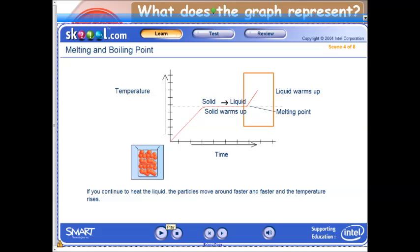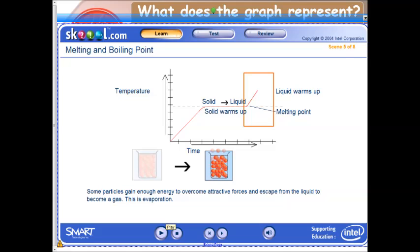If you continue to heat the liquid, the particles move around faster and faster, and the temperature rises. Some particles gain enough energy to overcome attractive forces, and escape from the liquid to become a gas. This is evaporation. When the temperature is higher, more particles have enough energy to escape, so evaporation is faster.